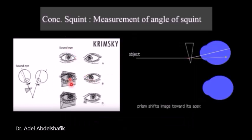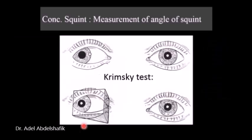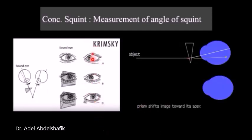Or by applying the prism in front of the sound eye. This method is better because it is easier to see the reflex on the center of the cornea becoming centralized. Here we are examining through the prism waiting for centralization. But here we are examining waiting for centralization without the prism so it's easier to notice.